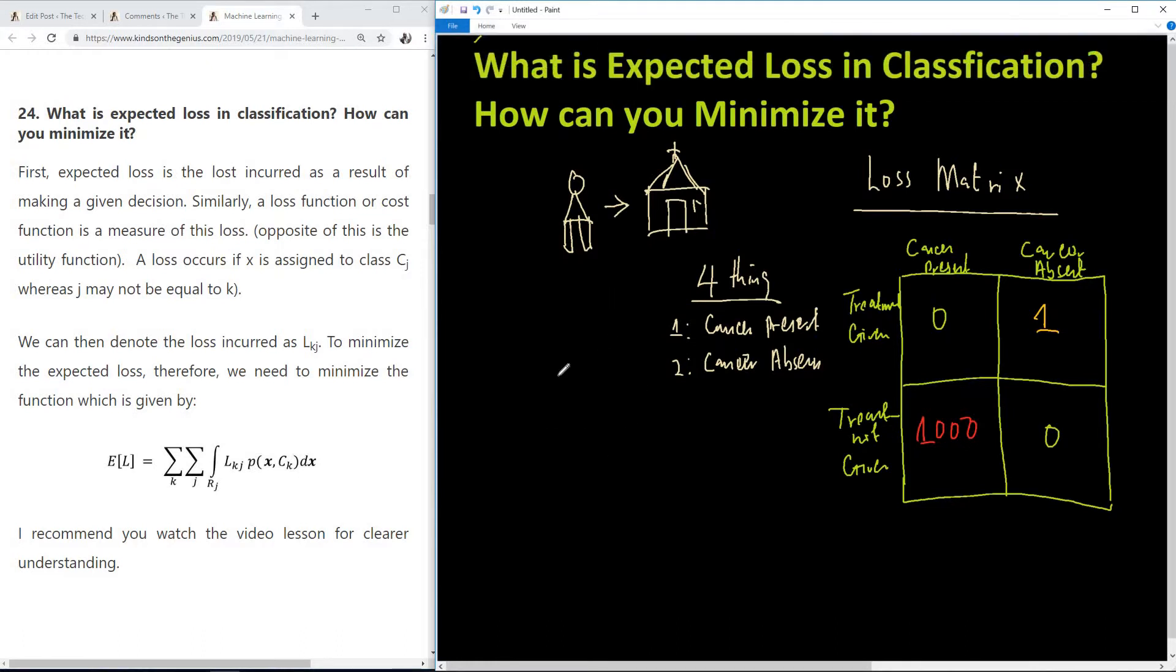We denote the loss as Lkj. Each time we make an assignment we incur this loss. Of course, if we make a correct assignment it becomes zero. Meanwhile, this loss is always there whether we assign correctly or wrongly.